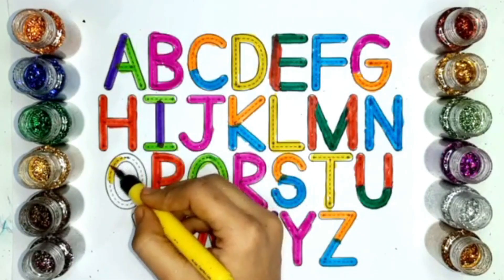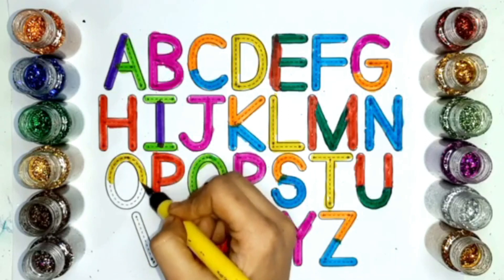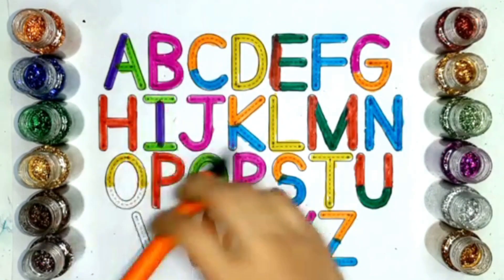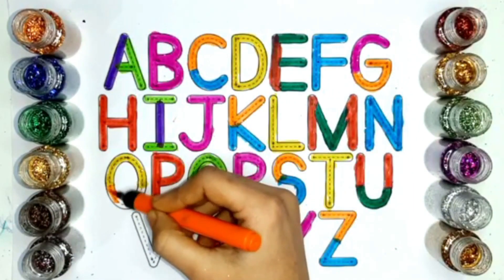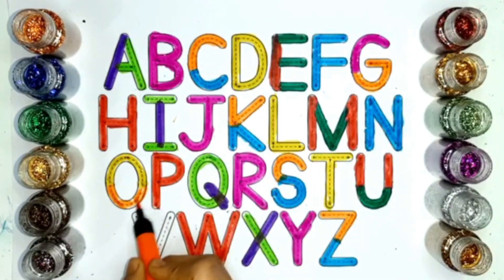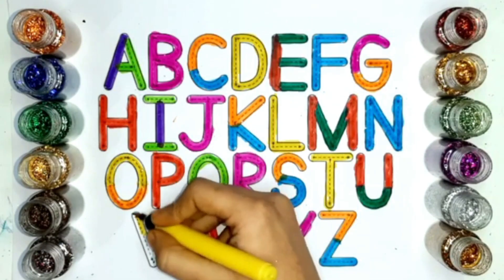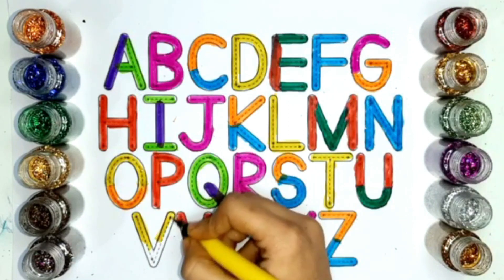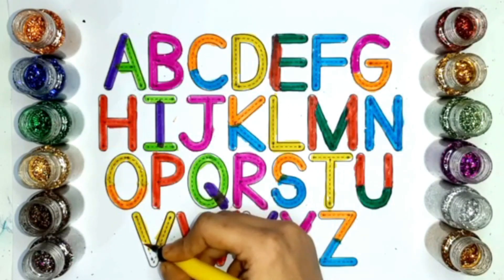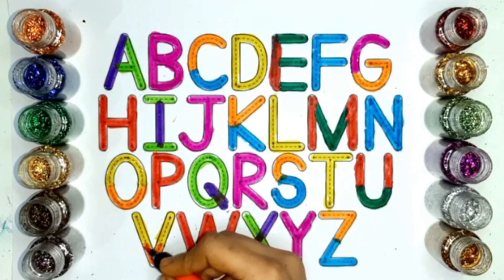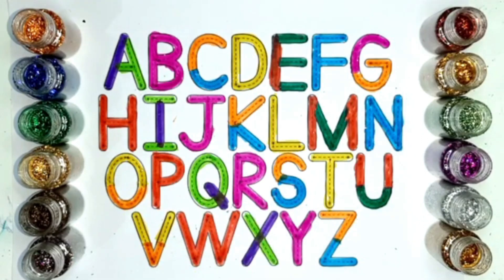Letter O. Yellow color. O for orange. Orange color. Letter V. V for violin. Thank you.